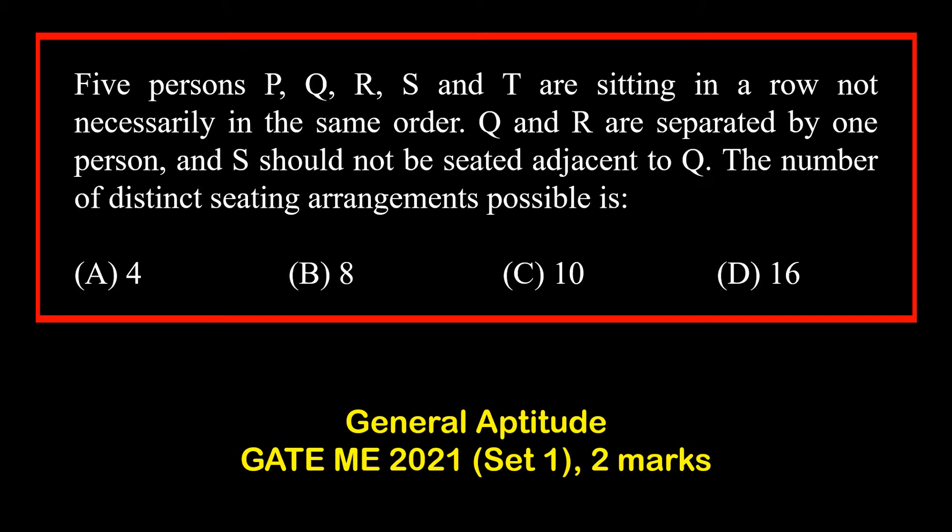5 persons P, Q, R, S, T are sitting in a row, not necessarily in the same order. Q and R are separated by one person, and S should not be seated adjacent to Q. Then what are the number of distinct seating arrangements that are possible?